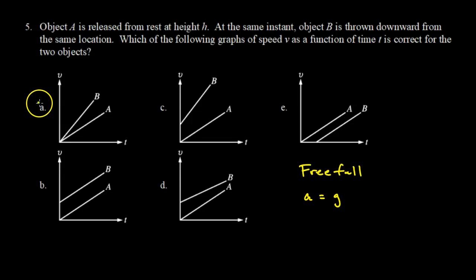So it cannot be A because the slope here is different. And the slope represents acceleration. And so none of these A, C, and D cannot be the correct answer because their slopes are different. And the slopes on a velocity graph represents acceleration. So our choices are B and E. And it says that they were dropped at the same instant, at the same time. This is not the same time. This is at the same time. So the answer is going to be B.